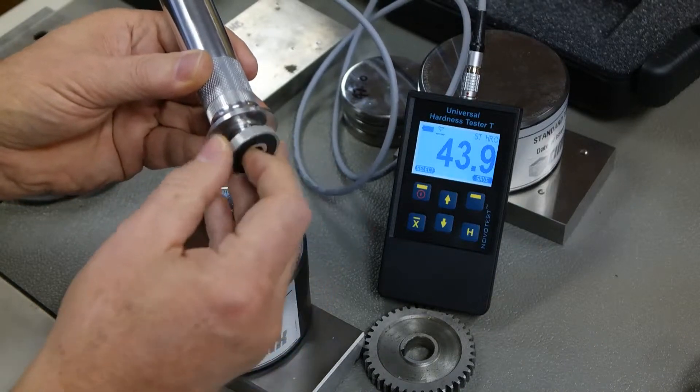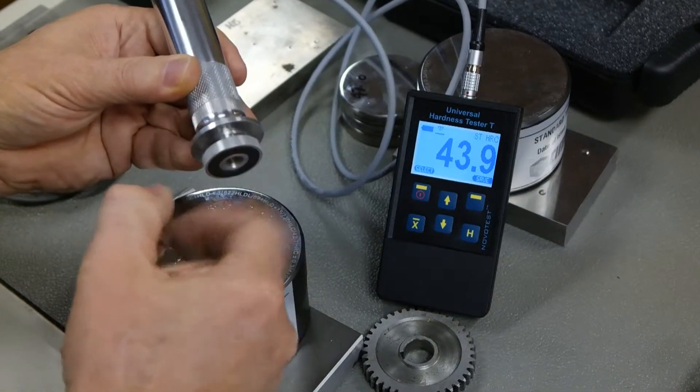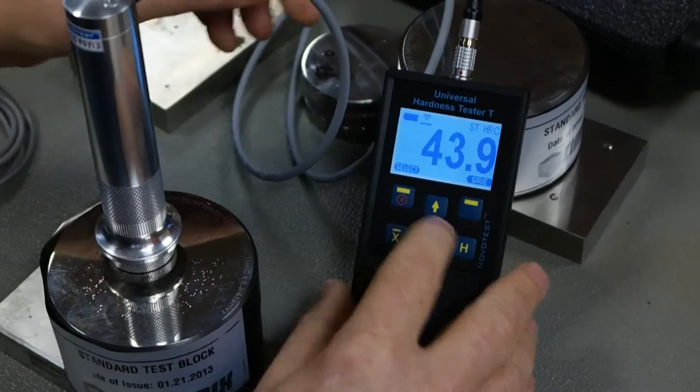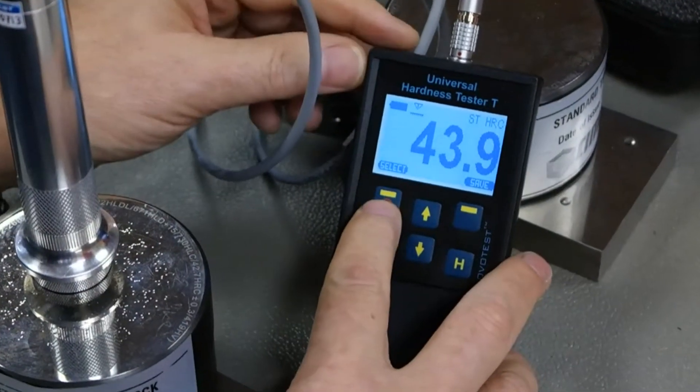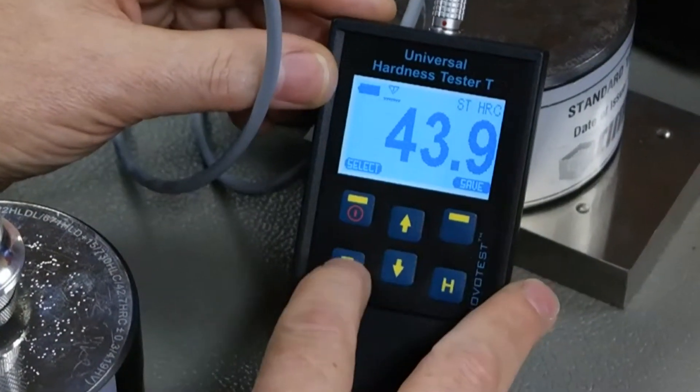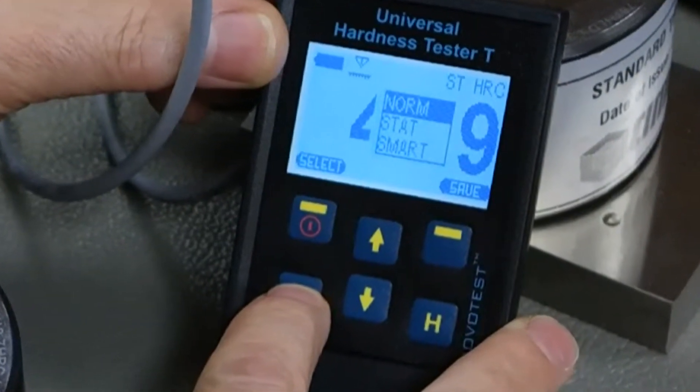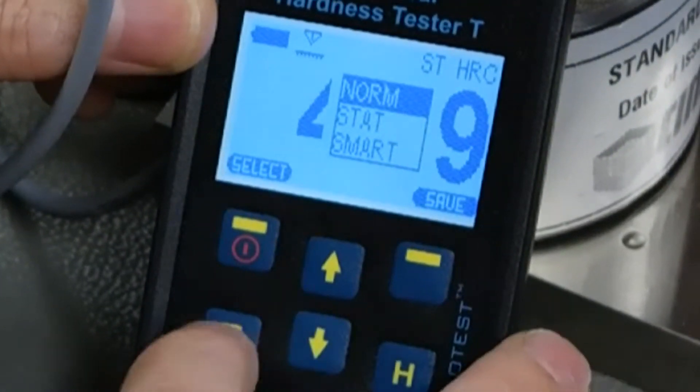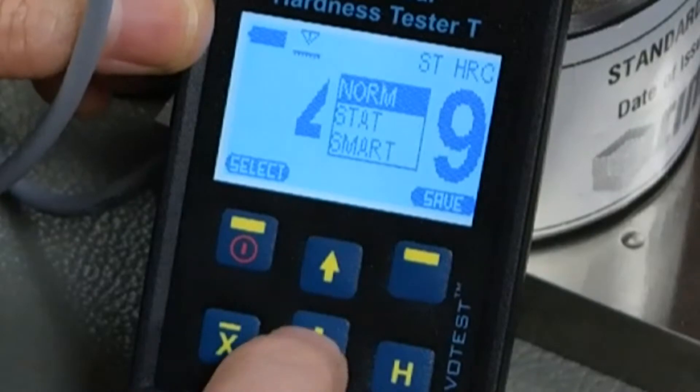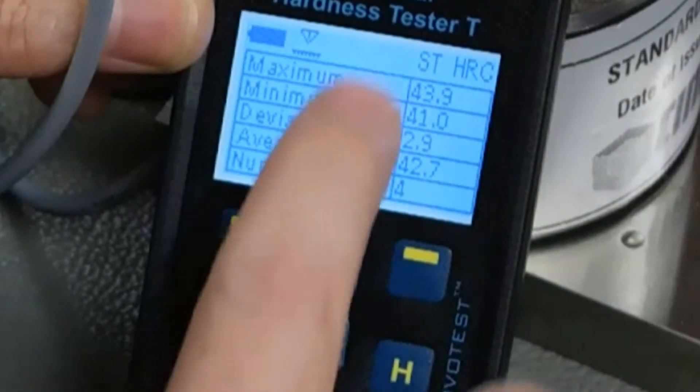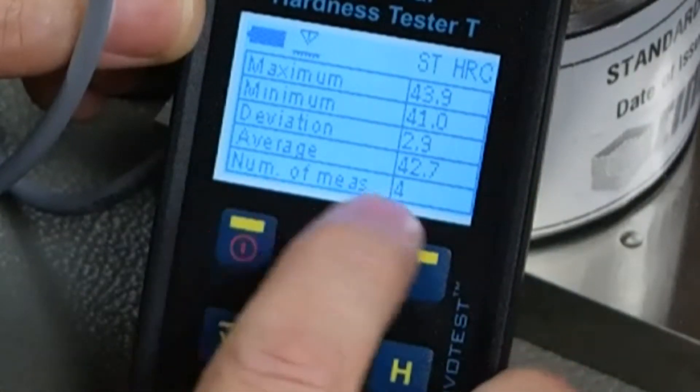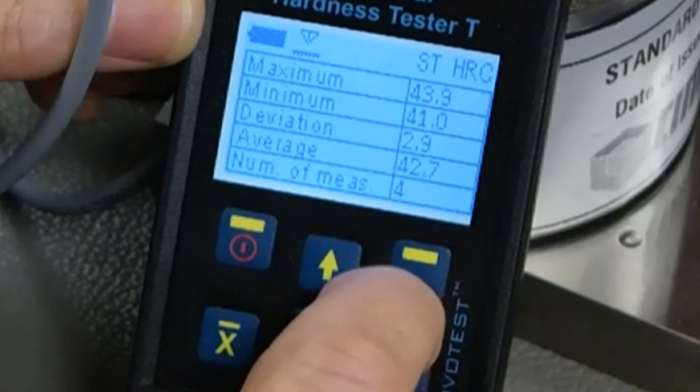Now on the display of the device, I've just got it set up right now to show what the result is of each test. I can go into the select mode here and by using this X button, right now it's normal, or I can show the statistics. This shows the statistics for, I've done four tests. The average was 42.7.